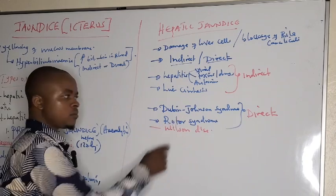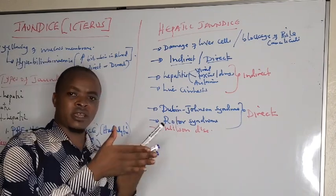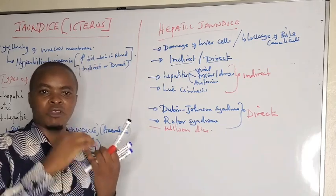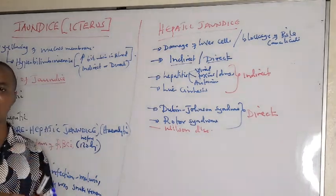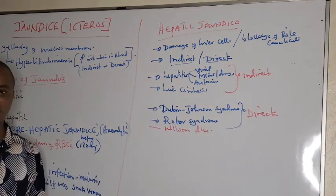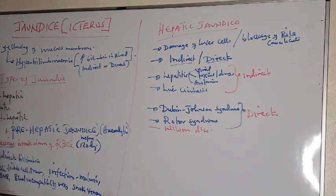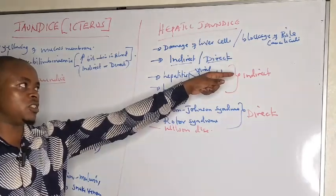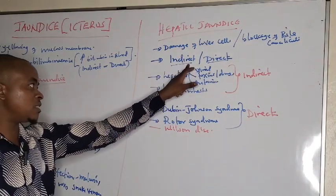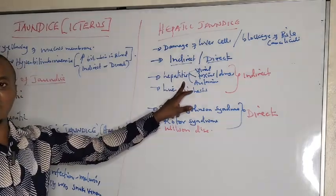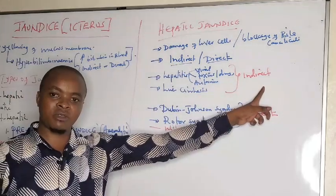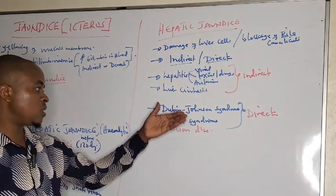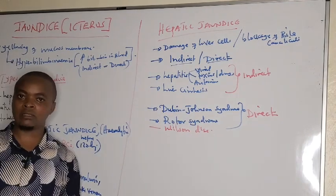Dubin-Johnson and Rotor syndrome are due to blockage of the excretory or drainage part, whereby the hepatocyte epithelium is closed and direct bilirubin cannot move into the bile duct. These are inherited conditions. Under hepatic jaundice: if hepatocellular damage is the cause, the bilirubin type is indirect; if it is due to drainage blockage — Dubin-Johnson, Rotor syndrome, or Wilson's disease — we see direct hyperbilirubinemia.